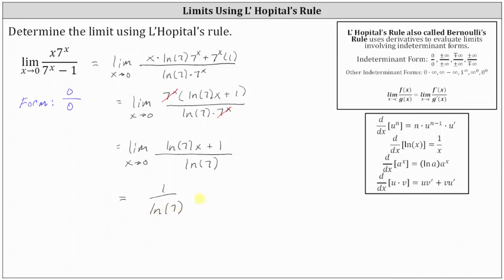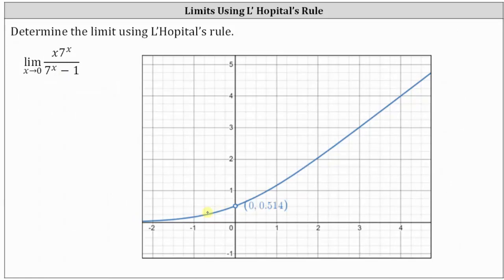To three decimal places, this is approximately 0.514. Let's verify this limit by looking at the graph of the original function. Here we have the graph of f of x equals the product of x and seven to the power of x, divided by the quantity seven to the power of x minus one. Notice as we approach x equals zero from the right and from the left, we are approaching the y-value of approximately 0.514, which is a decimal approximation for the exact limit of one divided by natural log seven.